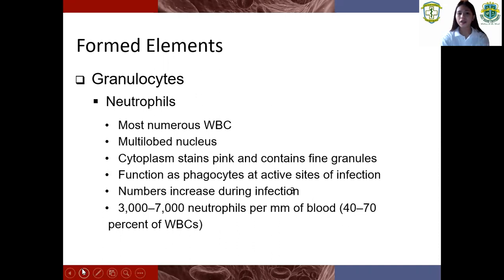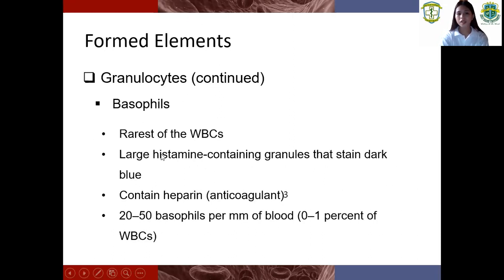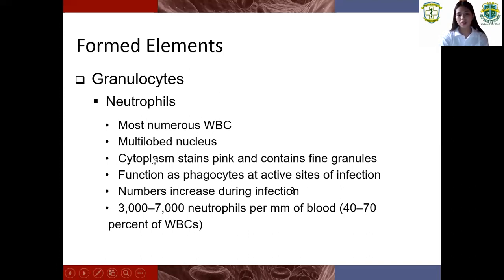The first one is neutrophils. The second one is eosinophils. The third one is basophils. So first I will discuss the neutrophils. Neutrophils are the most numerous white blood cell, with a multi-lobe nucleus, cytoplasm stains pink and contains fine granules. Function as phagocytes at active sites of infection. Numbers increase during infection. Normal range is 3,000 to 7,000 neutrophils.